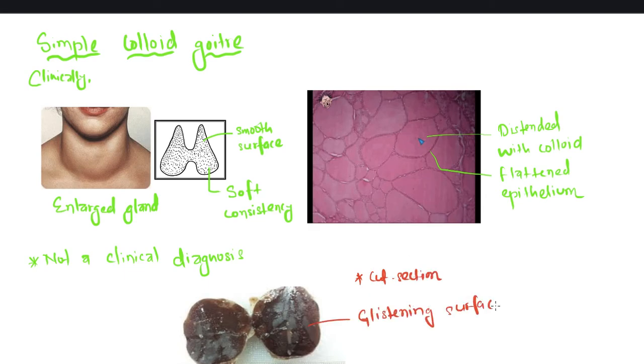In the cut section, you can see here the glistening surface due to follicles full of colloid. Simple colloid goiter is an irreversible pathology. It cannot be reversed by the use of iodine.